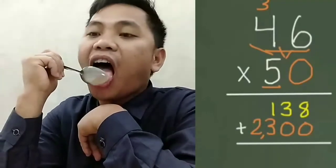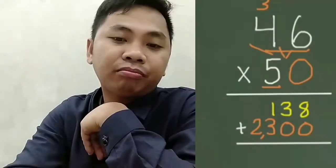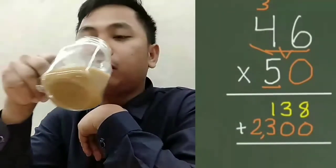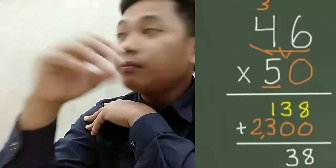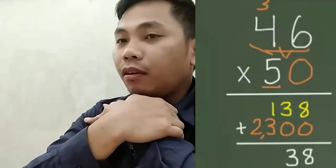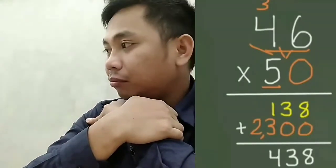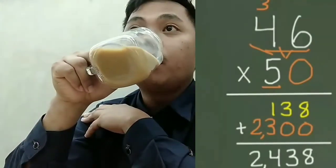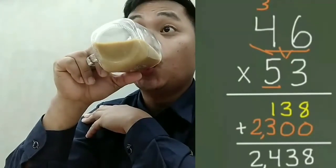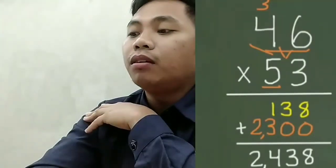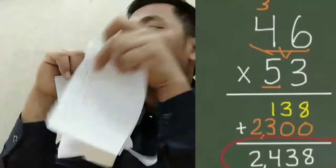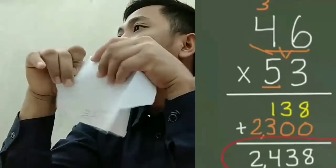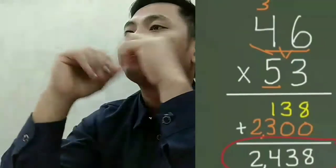So 8 plus 0 is 8. 3 plus 0 is 3. 1 plus 3 is 4. And 2. So for our problem, 46 times 53, our answer is 2,438.